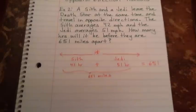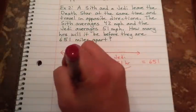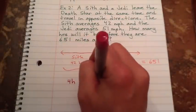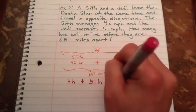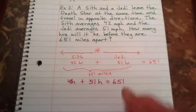So what you end up having here is 42H plus 51H equals 651. Oops, I forgot my two, sorry. Add these up.